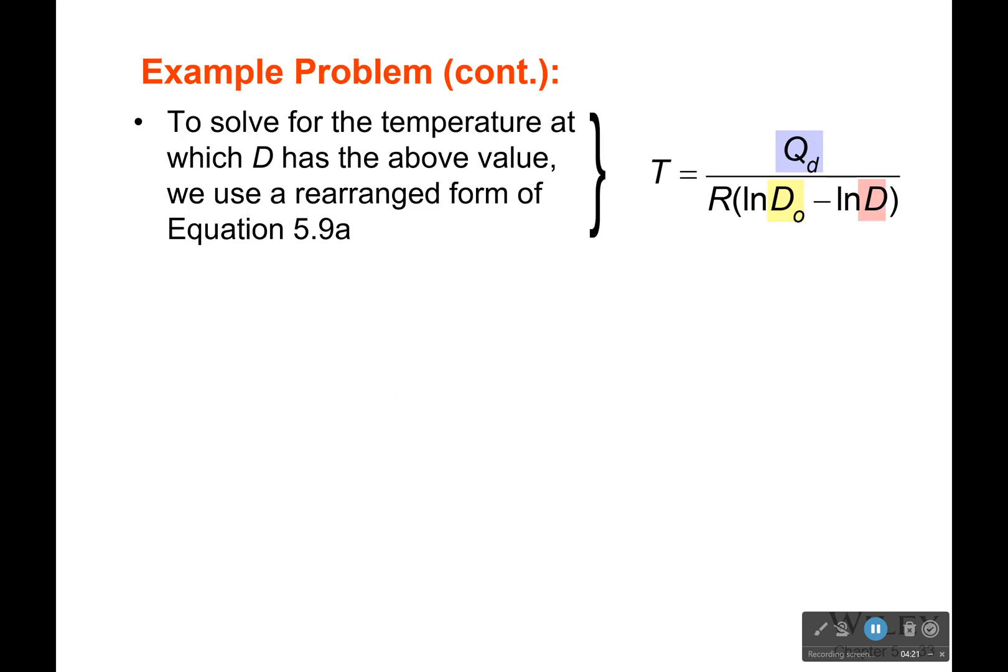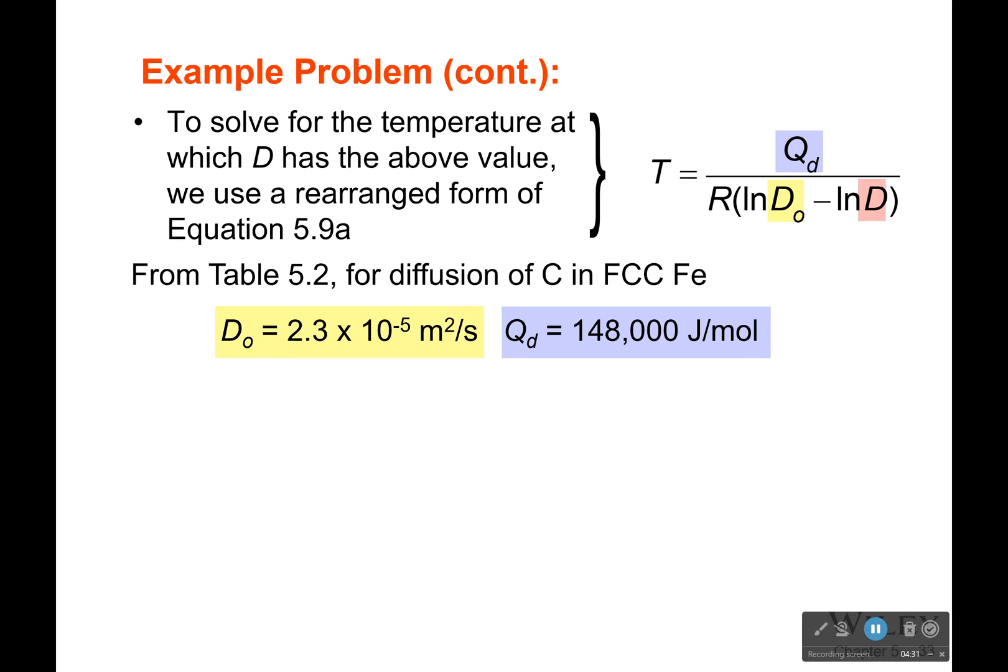Now, we know how to calculate a diffusion coefficient based on a particular temperature, but we need some information from that. For example, we would need the activation energy and my pre-exponential constant, which the problem doesn't give us. You actually have to go and find that from a table. So that information isn't going to be given to you. You would have to use the table to figure out what those are so you can plug it in here.